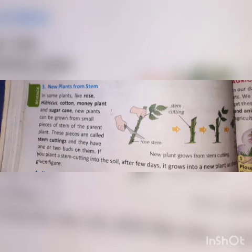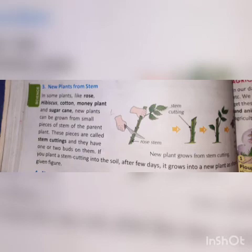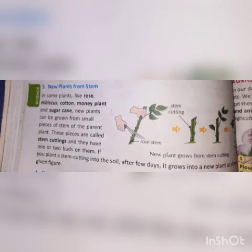New plants from stem: new plants can be grown from small pieces of a stem of the parent plant, called stem cuttings. You can cut small parts of the stem which have one or two buds, and plant them into the soil. The stem cutting grows into a new plant, as shown in the given figure.